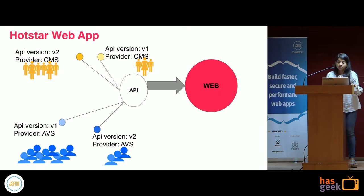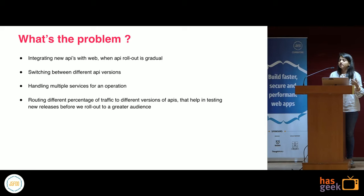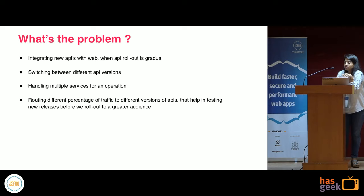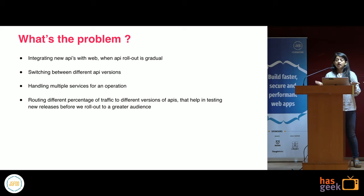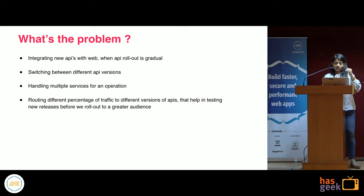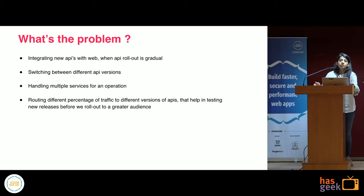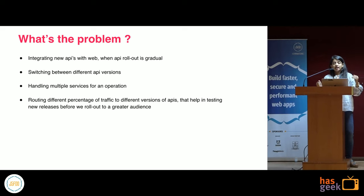As I said, Hotstar earlier was an amalgamation of multiple third-party services. With the kind of response we were getting from our audience, we realized we should have our own tech team and soon move to in-house services. This transition period from third-party to in-house services was challenging because moving in one go was not possible. So during this transition, there was a requirement to have third-party and in-house services run in parallel. There's an X percentage of traffic directed to third-party services and a Y percentage directed to the in-house service, with the goal of increasing Y and eventually killing X.